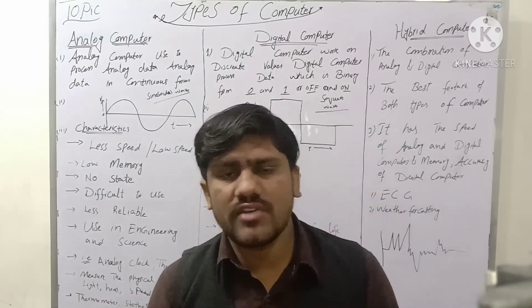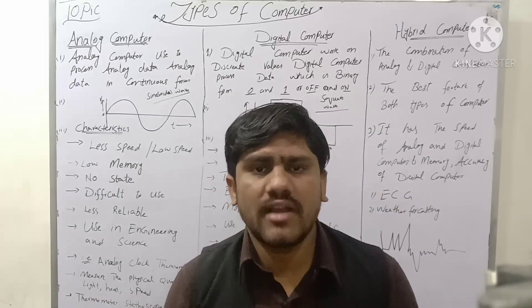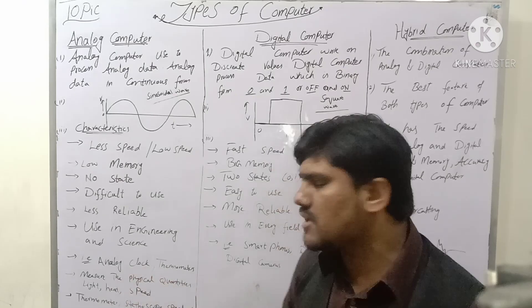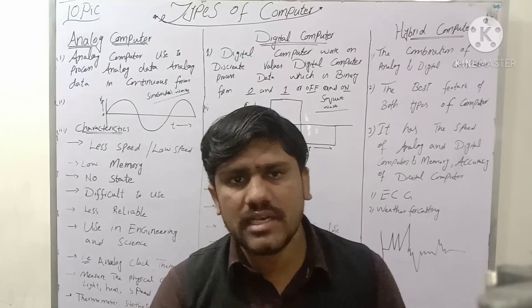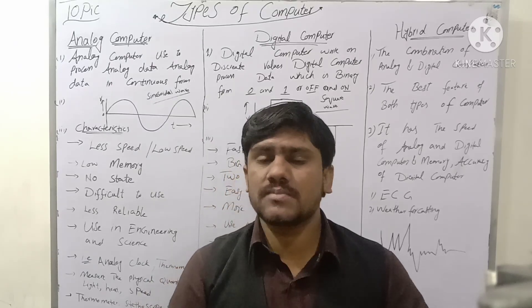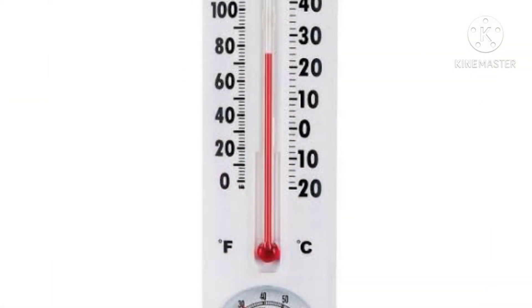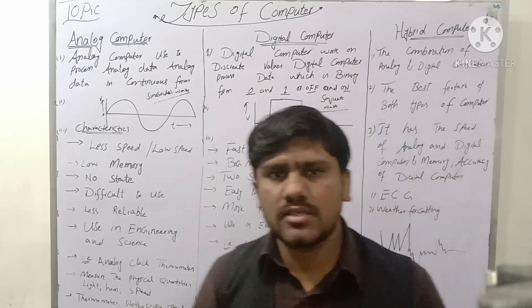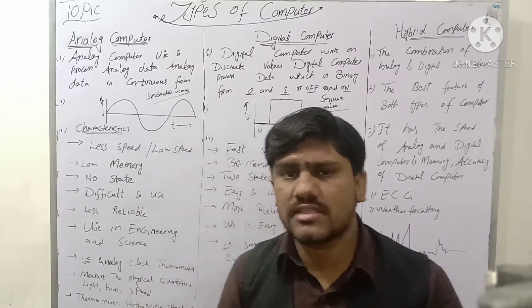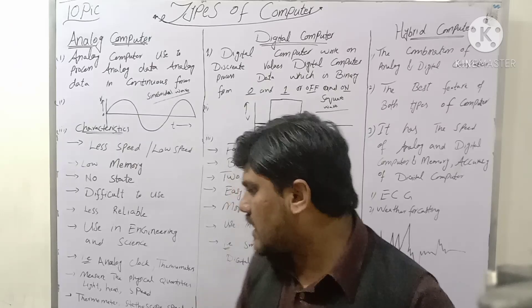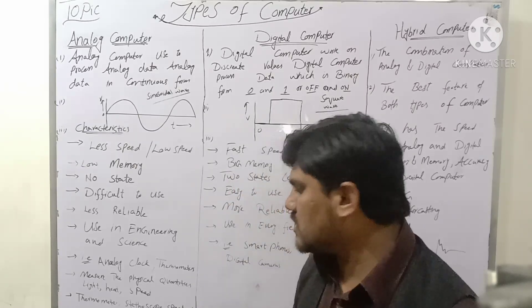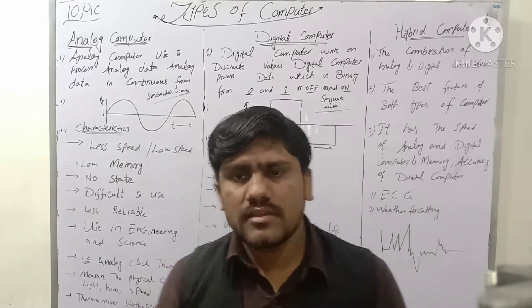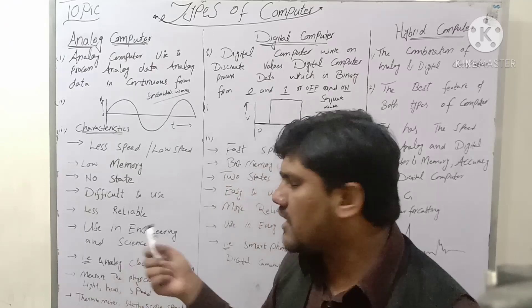Examples of analog computers include analog clocks, thermometers, and speedometers — the speedometer is the speed meter used in a car. Also stethoscopes, which doctors use, and blood pressure apparatus are examples of analog computers.